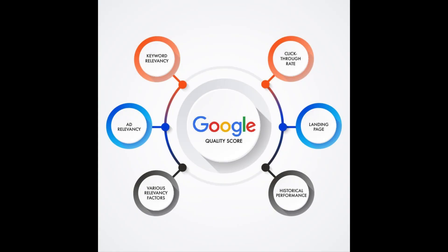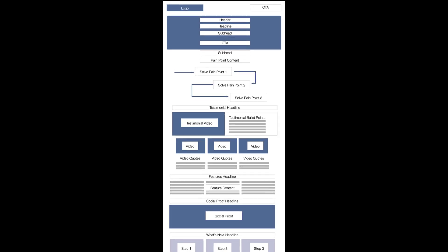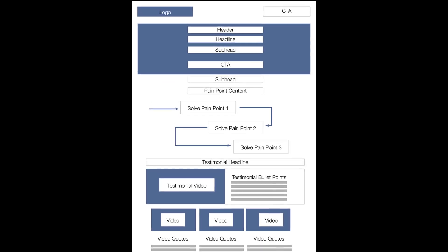Advertising platforms use a similar SEO algorithm to determine your quality score — an arbitrary score given to each page on how it relates to the keyword. This helps advertising platforms keep irrelevant information off of certain searches, but it also allows them to artificially inflate the price of a click. The code structure for this type of page is similar to the SEO structure with a few major differences.